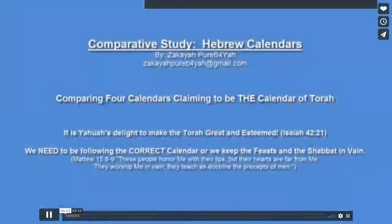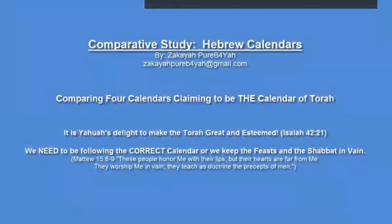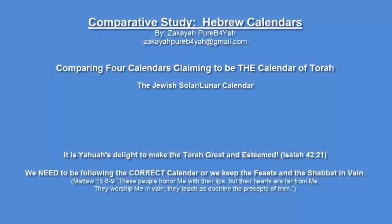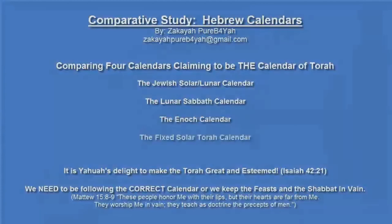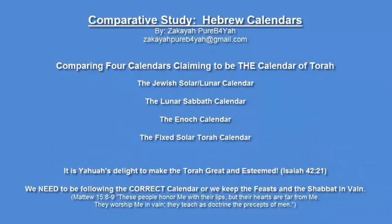Hi, I'm Zakiya, and the reason I'm putting this presentation together is because I wanted to share with people the study that I've done comparing four of the Hebrew calendars that are going around out there. I've chosen the four primary calendars: the solar lunar Jewish calendar, the lunar Shabbat calendar, the Enoch calendar, and the purely solar fixed Torah calendar. I did this in-depth study because I find it important to obey Torah, and we cannot obey Torah if we don't know when the feasts are to be held.